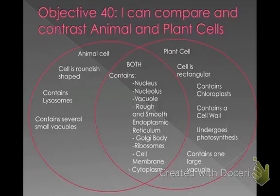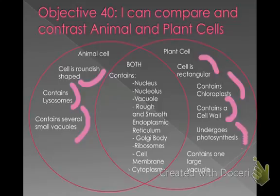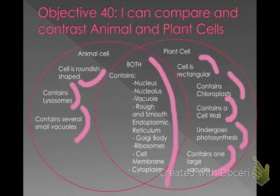Here's our last objective — Objective 40: I can compare and contrast animal and plant cells. This Venn diagram shows that an animal cell is round, contains lysosomes used for digestion, and has several small vacuoles. Your plant cell is rectangular, contains chloroplasts, has a cell wall for support, undergoes photosynthesis to make its own food, and has one large vacuole. Both plant and animal cells contain: a nucleus, a nucleolus, vacuoles, rough and smooth endoplasmic reticulum, Golgi body, ribosomes, cell membrane, and cytoplasm. So they have a lot in common and just a few differences.